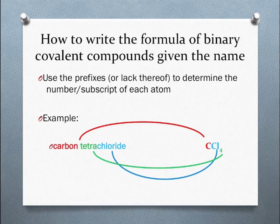For example, carbon tetrachloride. The lack of a prefix on carbon means there's only one carbon. The prefix tetra means there are four chlorines in the formula. The compound formula would be CCl4.